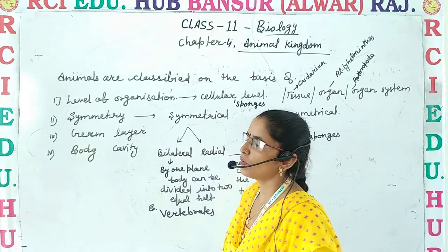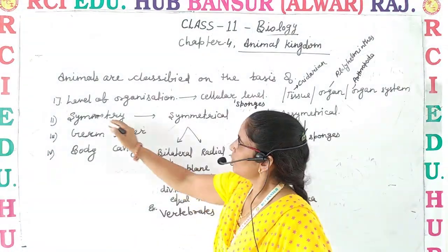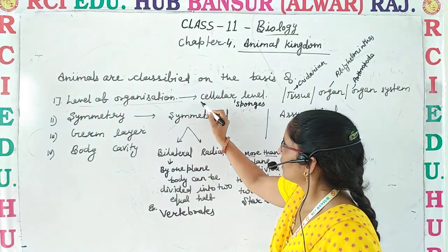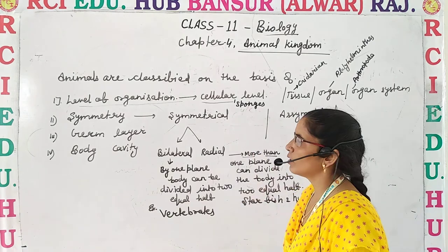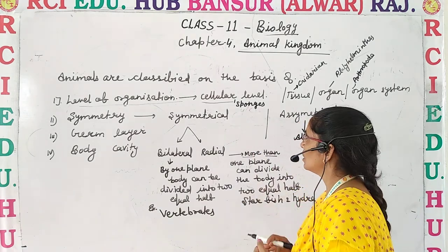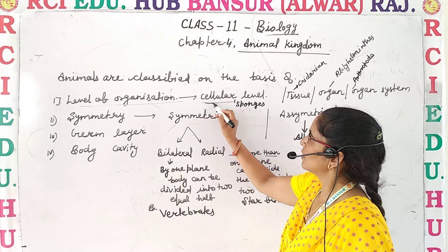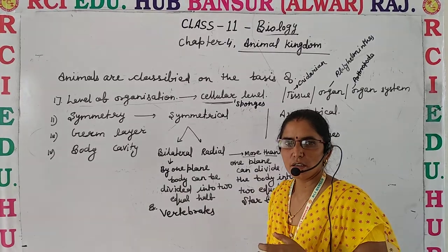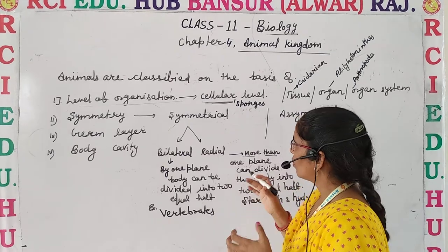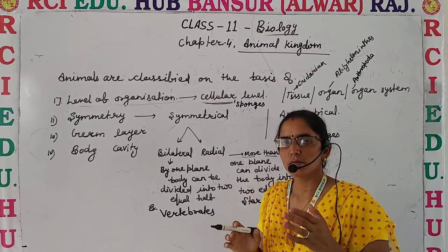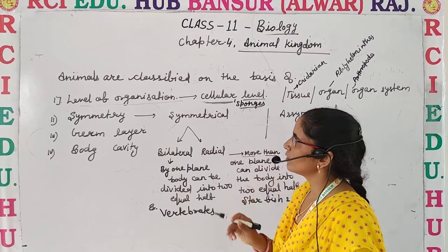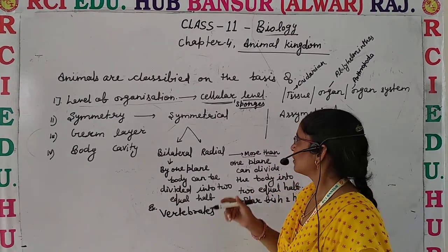First, animals can be classified on the basis of level of organization. If we discuss about the level of organization, animals are classified according to the cellular level of organization. It means a single cell can perform all the various functions.